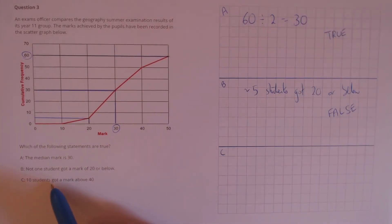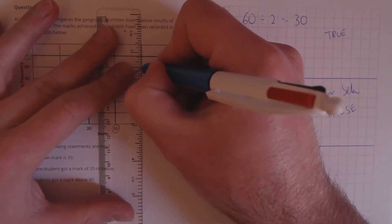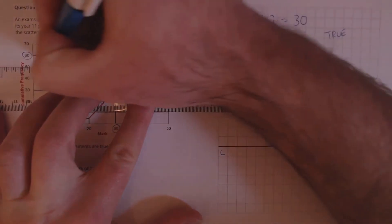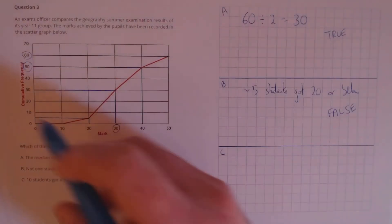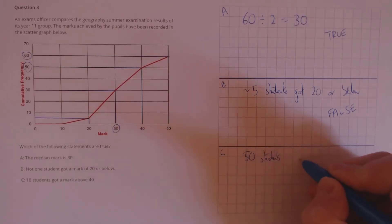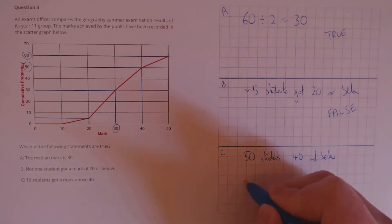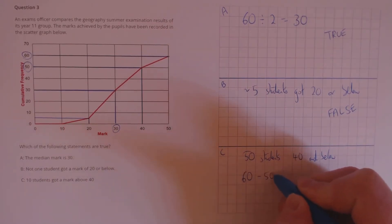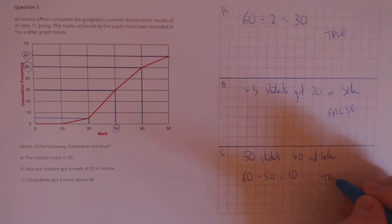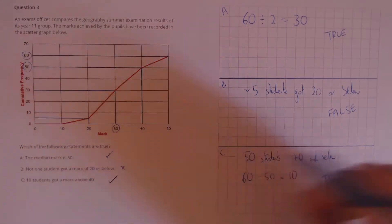Finally, C: 10 students got a mark above 40. From the graph we can read off that if we go up from the mark of 40 and across the cumulative frequency, we see that 50 students got a mark of 40 and below. That means the remainder, 60 minus 50 equals 10, students must have got a mark above 40, which means this is true. Finally, we have true, false and true.